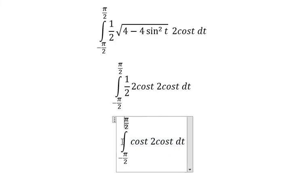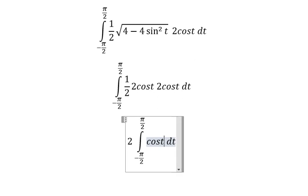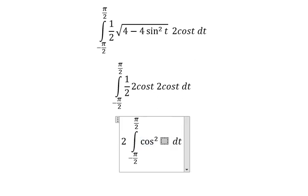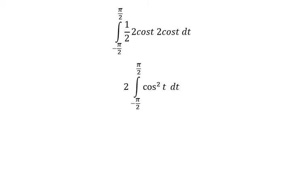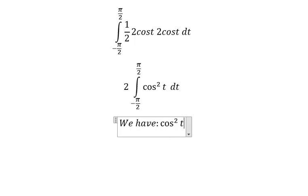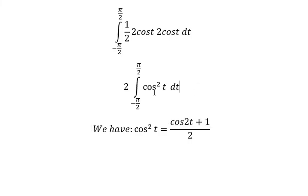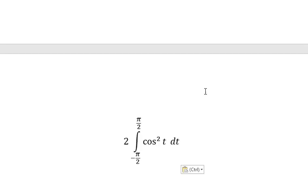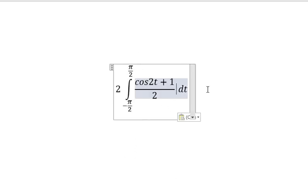We bring the factor of 2 in, and after cancellation we are left with cos²(t). Next, we use the identity: cos²(t) equals (cos(2t) plus 1) over 2. We substitute this in, and after the 2 and the one-half cancel, we proceed to integrate.